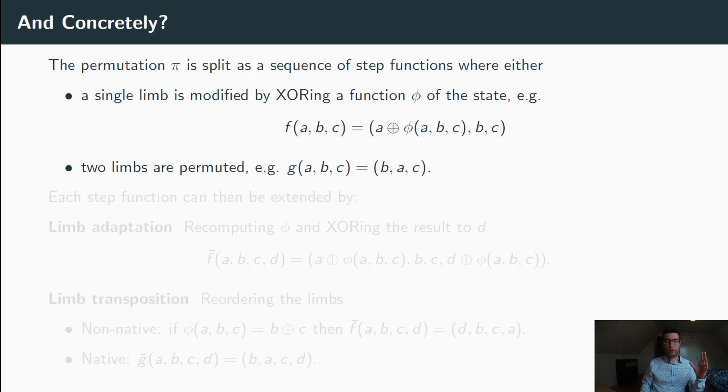So far, we've seen together how to detect faults, provided that we can extend a permutation into a code-abiding permutation. But the missing information that we still need to address is how do we concretely build such an extension. And the way to proceed is as follows. So we will split the permutation pi into a sequence of step functions that can be of two forms. So the first type of step function that we will consider will modify a single limb by XORing to it a function phi of the state. The second type of step functions simply consists in swapping two limbs.